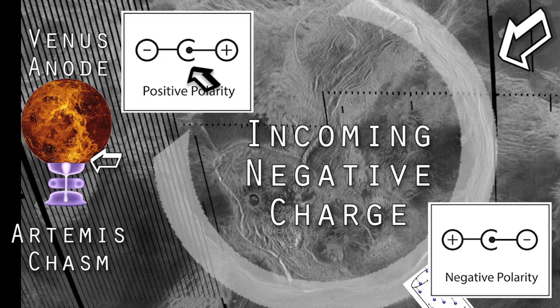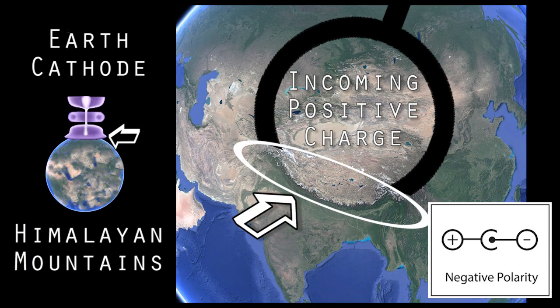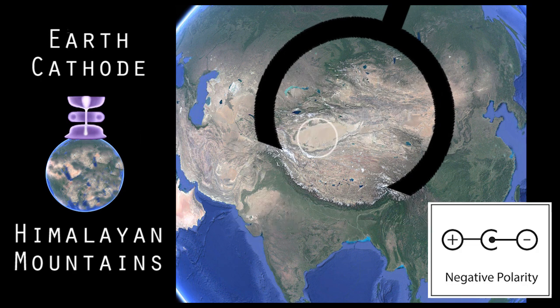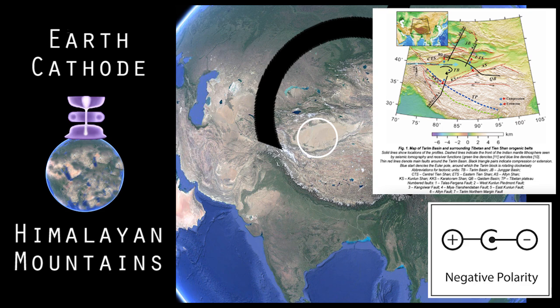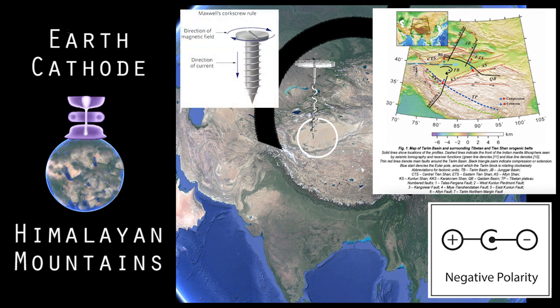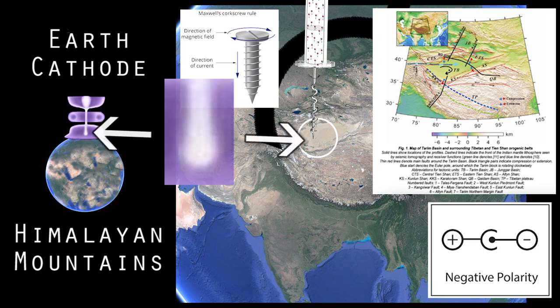Venus formed a chasm in the shape of a sea, while the Earth formed mountains between the pincers of that sea. Right here in the middle of the Tarim Basin is a 46-degree clockwise thrust rotation in the crust, which indicates that this is where the current from Venus entered the Earth's crust. This is the actual location for the lower bulb on the Squatterman figure.